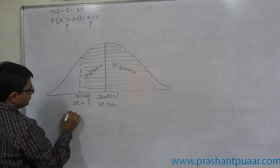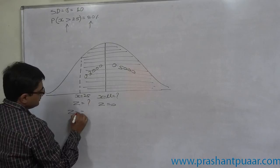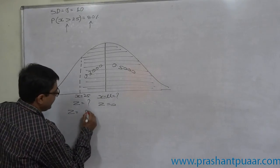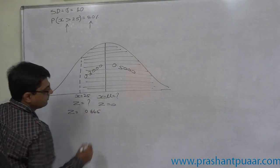Now, what is z here? So z is 0.845. 0.845. We can find it from table. 0.845.